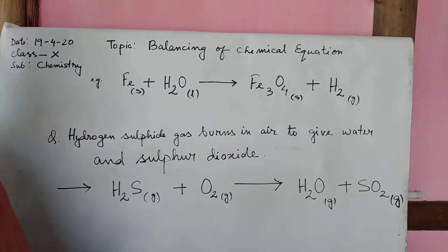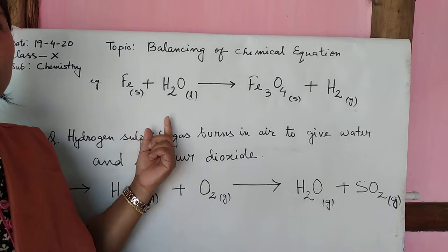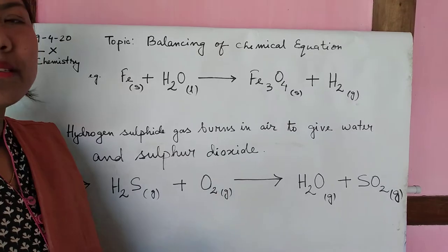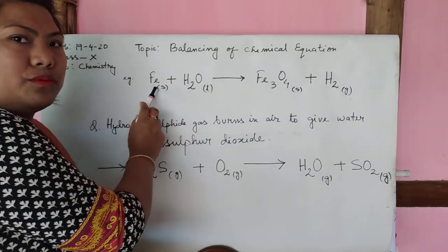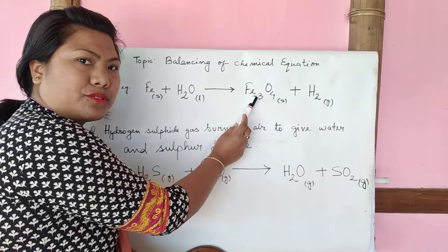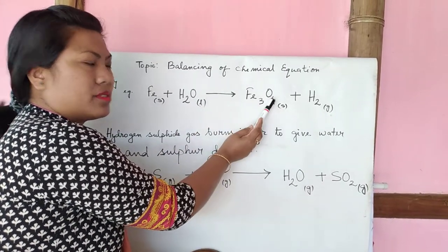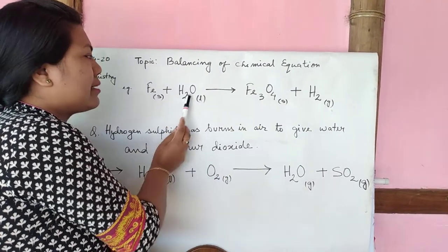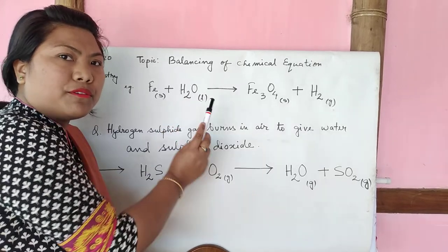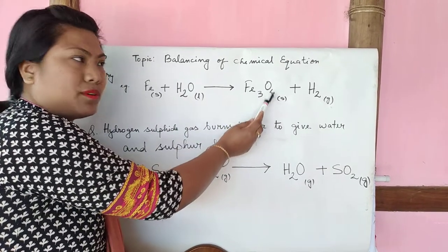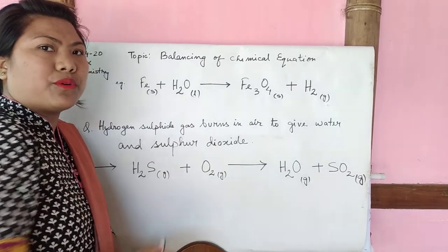Then now you have to find out which atom is the largest in number. Here iron 1 and here iron 3, and here 2 and here 2 and here 2 and oxygen here 4 and here oxygen 1. So now you found oxygen has the largest number of atoms in the equation.